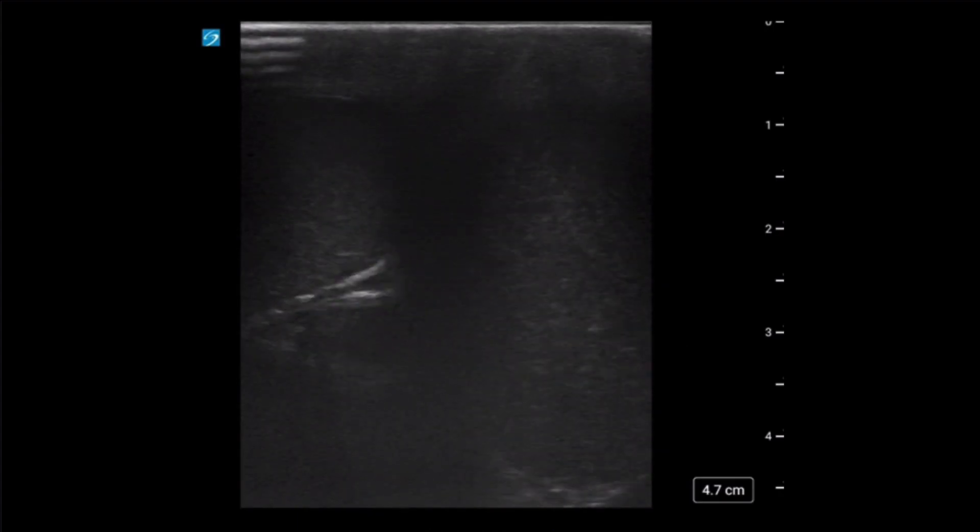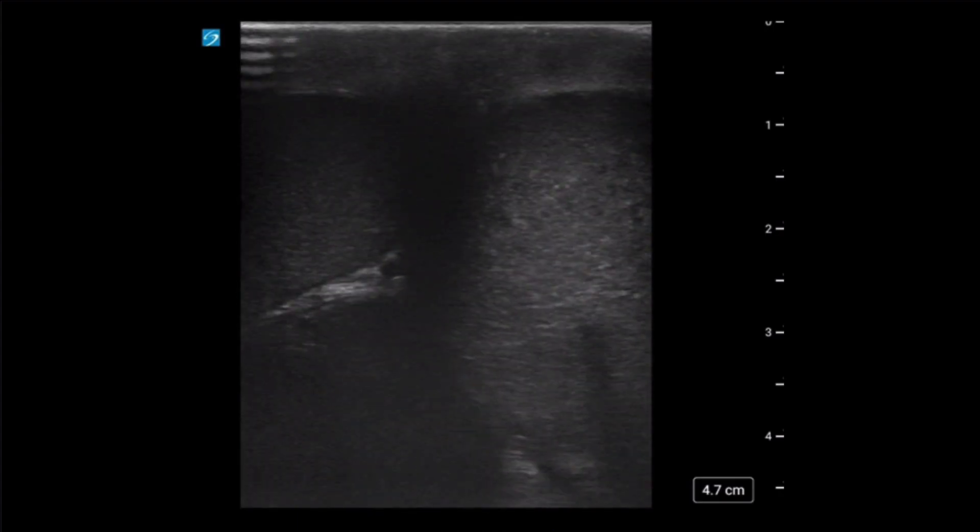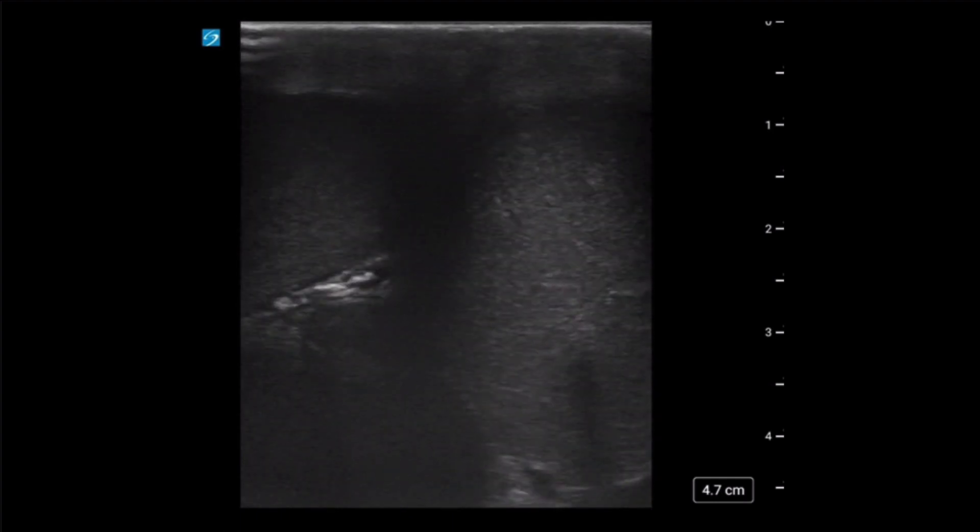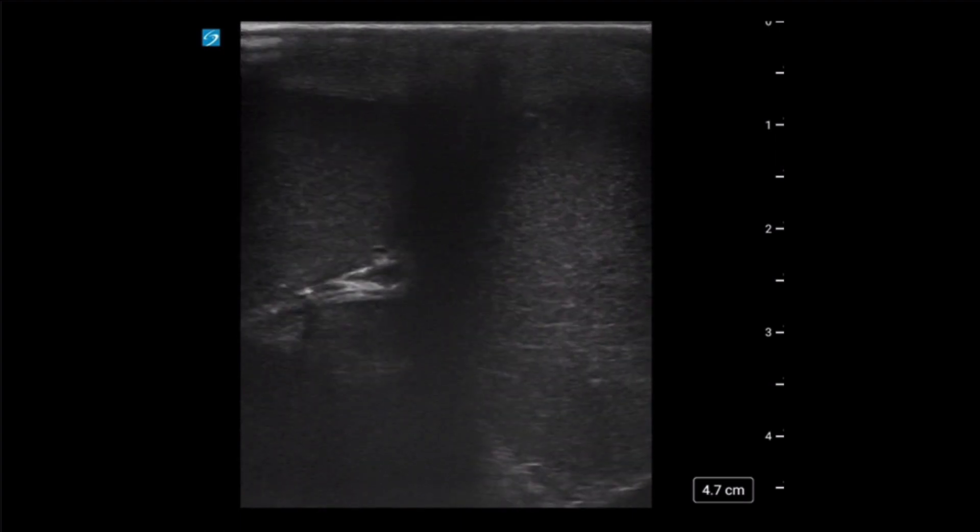By visualizing both testicles, the operator is able to assess relative difference in size and pathology by giving a direct comparison. While this clip does have limitations, a portion of each testi can be seen. By being able to compare each side, we are able to see the subtle difference in echogenicity between the two, with the left testicle being slightly more hyperechoic or bright.